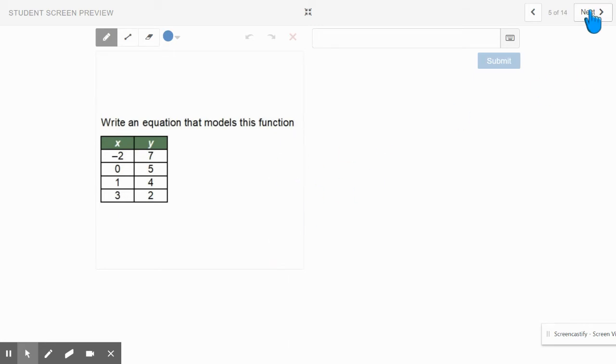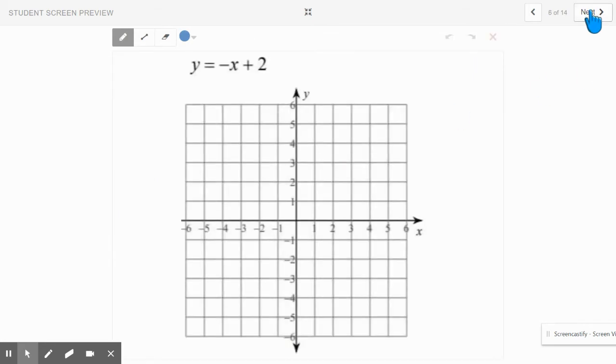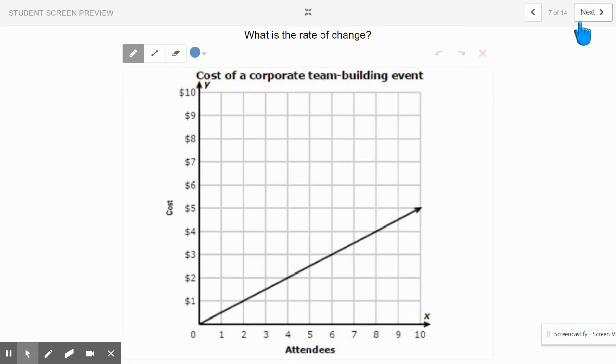All right. This one, we'll skip this one for now. We may go back to it. And this one, you can't graph it. All right. What's the rate of change for this graph? Take a look at it. What's the rate of change for this graph? I'll give you a second.